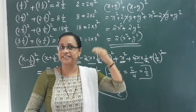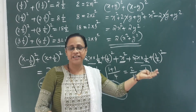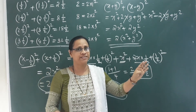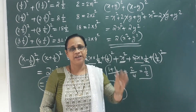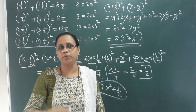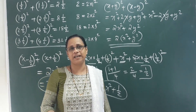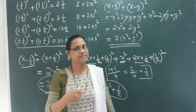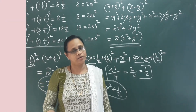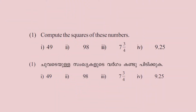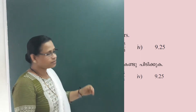We will explain the theory in the next class. Then we will start the problems. Page 79: Compute the squares of these numbers — 49, 98, 703 by 4, and 9.25.